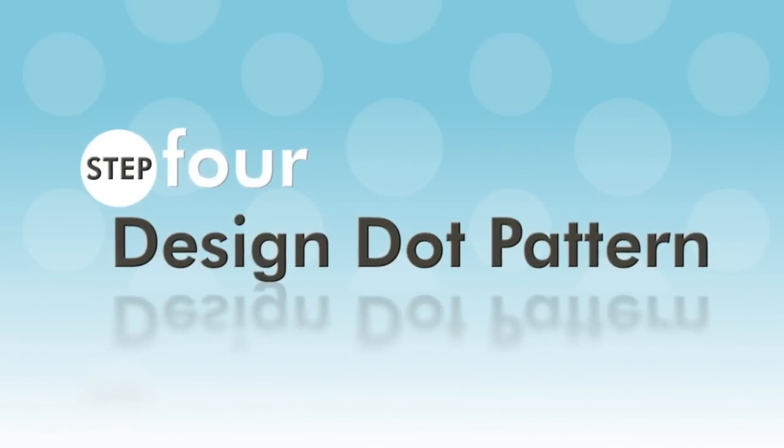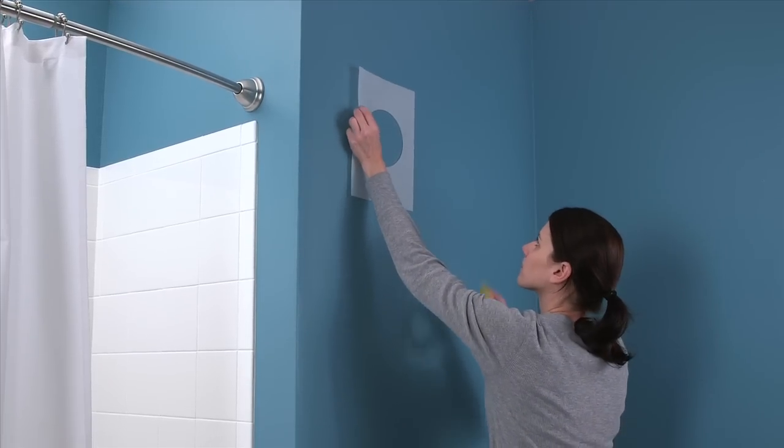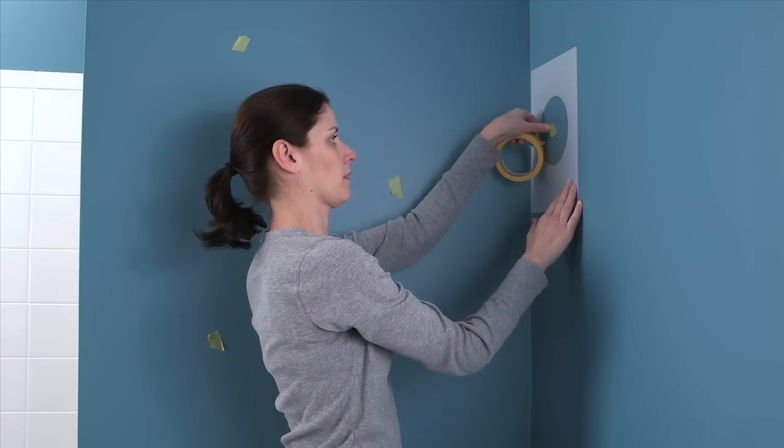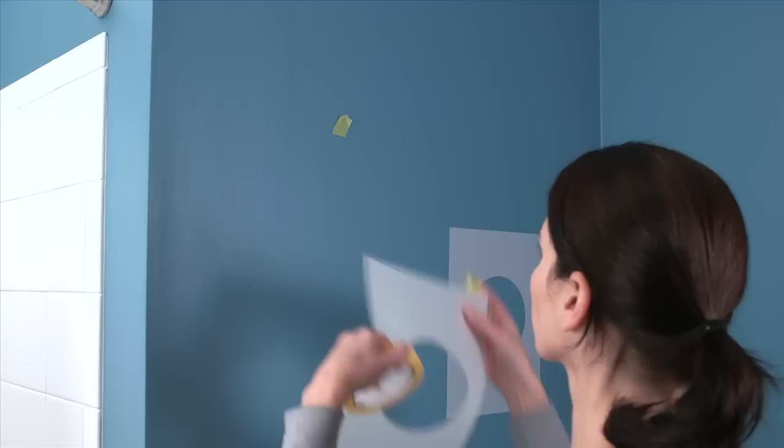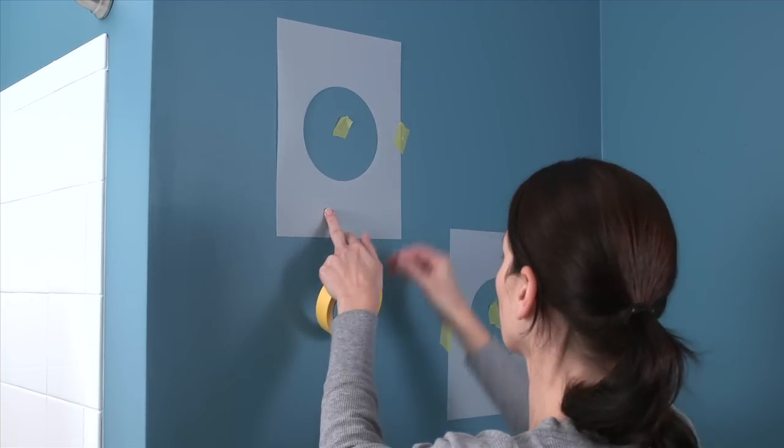Step 4: Design your dot pattern on the wall. Determine where you want the dots on the wall and mark the center of each dot with a light pencil mark or piece of tape. Then attach each dot stencil to the wall using low tack safe release tape.